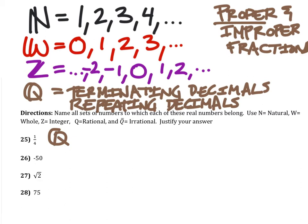Negative 50 here. Since it's negative, it's not natural or whole, but it is an integer. Negative 50 also could be written as an improper fraction, so it is also rational.